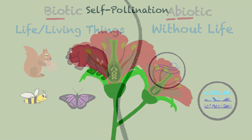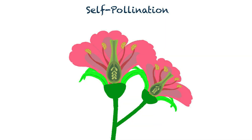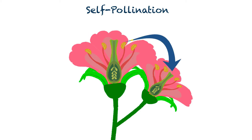So, let us now understand what is the meaning of self-pollination. Self-pollination occurs when the pollen from the anther is transferred to the stigma of the same flower, or another flower on the same plant.